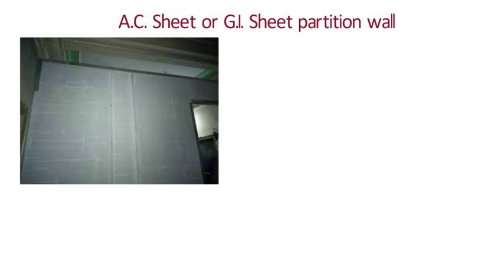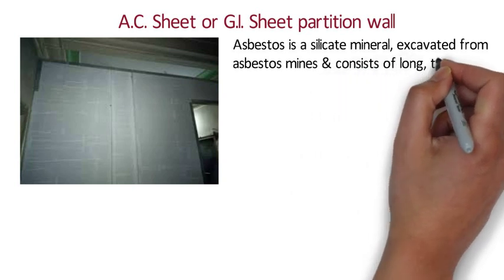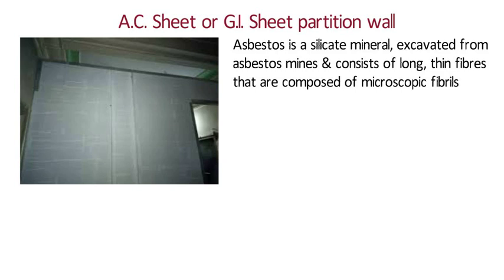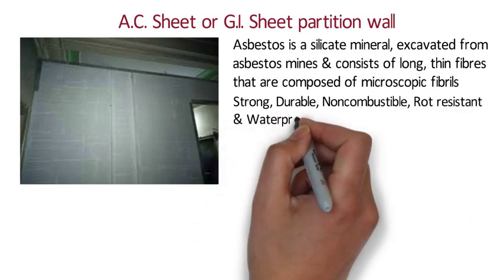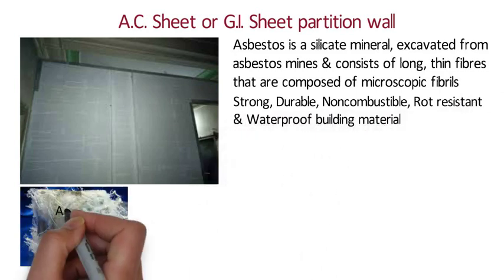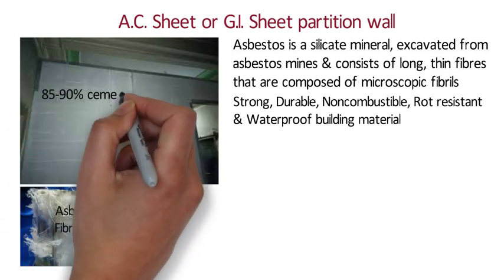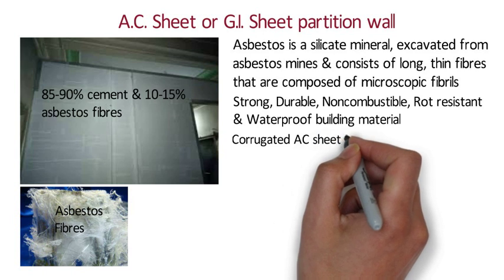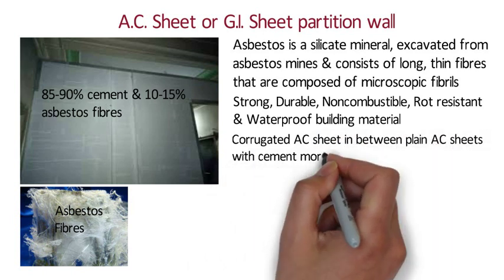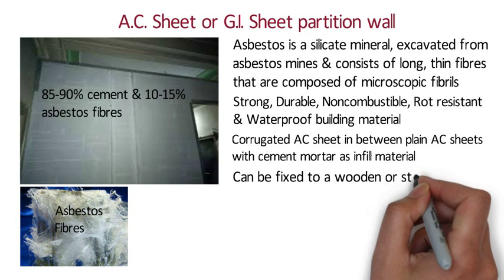AC Sheet or GI Sheet Partition Wall: Asbestos is a silicate mineral consisting of long thin fibers composed of microscopic fibrils. When bound with cement, it becomes versatile, strong, durable, non-combustible, rot resistant and waterproof. The asbestos fibers act as reinforcement for the cement and increase its tensile strength. Asbestos cement sheet consists of 85–90% cement and 10–15% asbestos fibers. This type of partition consists of corrugated asbestos cement sheet placed between plain AC sheets with cement mortar infill material. AC sheet or GI sheets can also be fixed to a wooden or steel frame to form a partition wall.